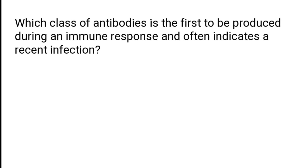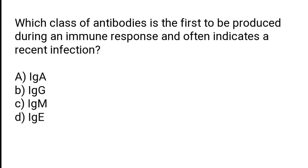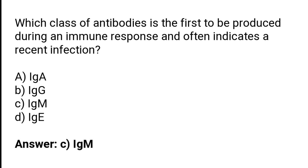Which class of antibodies is the first to be produced during an immune response and often indicates a recent infection? IgA, IgG, IgM, or IgE? The correct answer is option C — IgM is the first antibody class produced during an immune response.